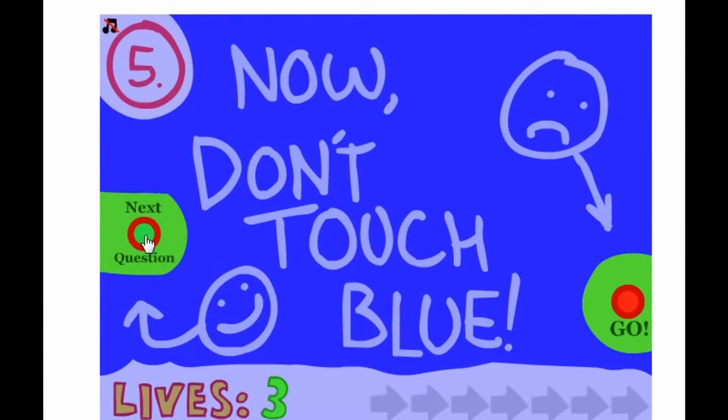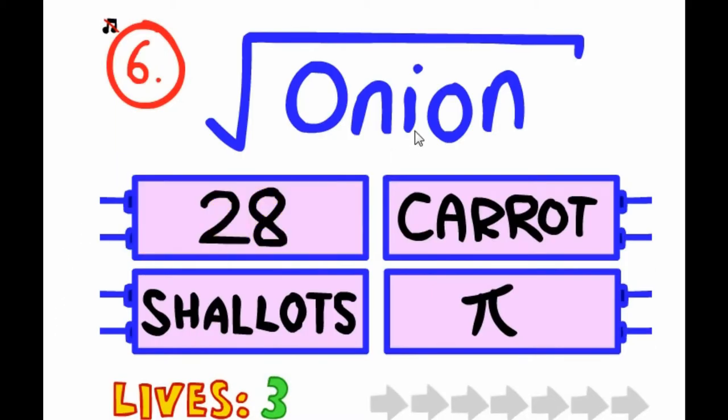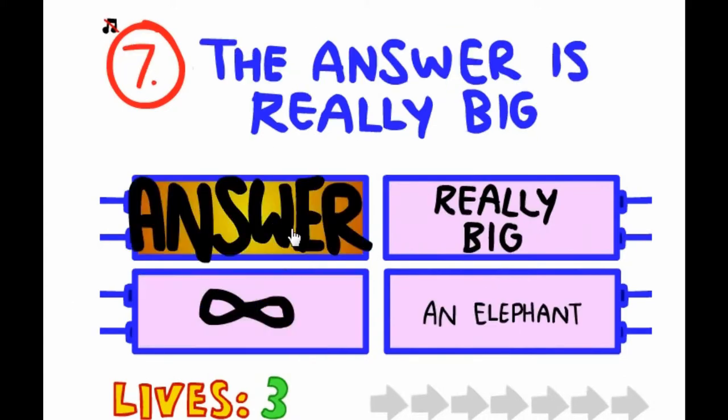Okay, so onion divided by what? What is close to onions? Shallots are close to onions. So fresh, shallots. The answer is really big? Really big answer? At first I thought it was this one, but an elephant is really big.